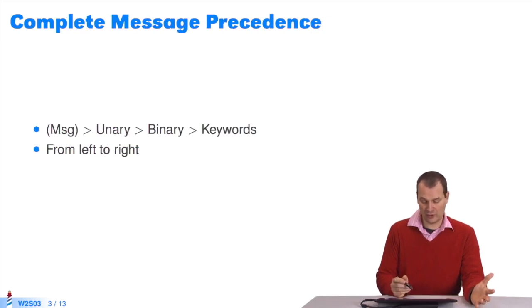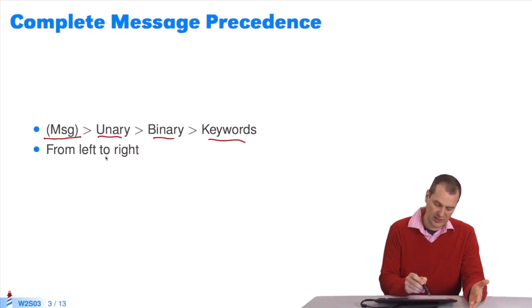There are messages with parentheses when they need to be executed first. Then you have unary messages, then binary, then keywords. When at the same level, you go from left to right.